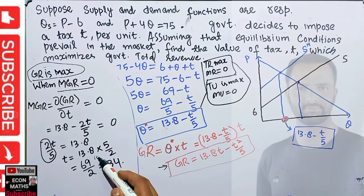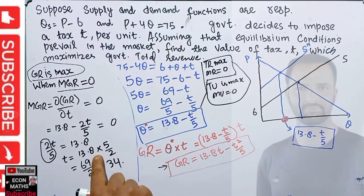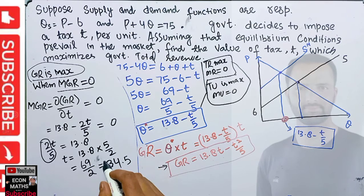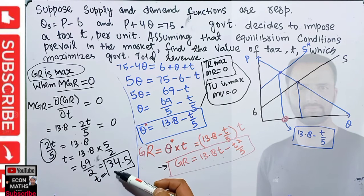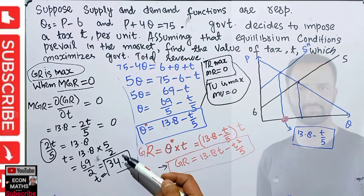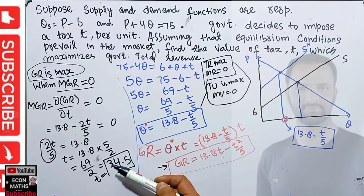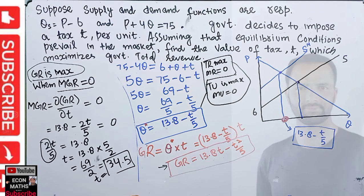The value of T comes out to be 34.5. So the tax rate of T = 34.5 is the rate the government must impose so that it gets the maximum possible government revenue.